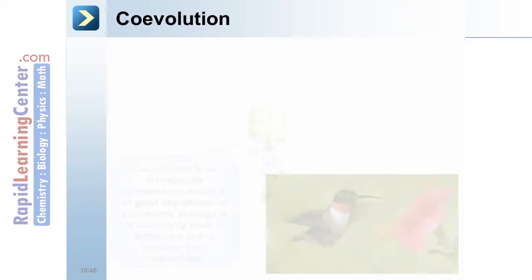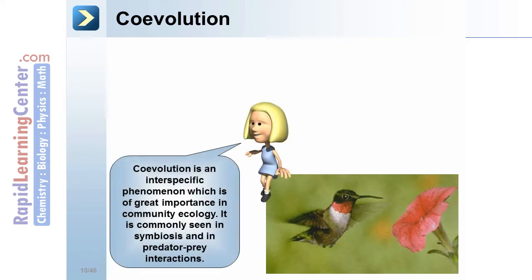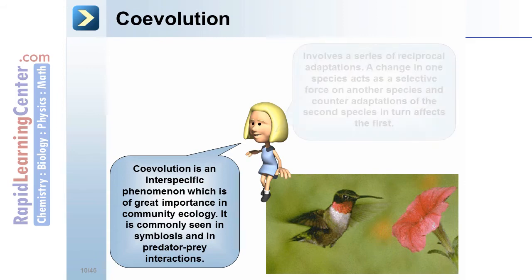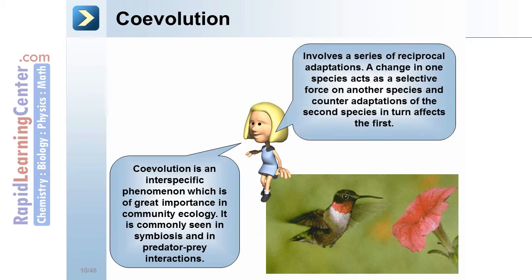Co-evolution is an interspecific phenomenon of great importance in community ecology. It is commonly seen in symbiosis and in predator-prey interactions. This involves a series of reciprocal adaptations: a change in one species acts as a selective force on another species, and counter-adaptations of the second species in turn affect the first.